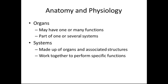Organs are made up of two or more types of tissue and may have one or many functions. An example of an organ with more than one function is the liver. The liver produces bile to help with digestion, converts glucose to glycogen and stores it for emergencies, and also helps with the breakdown of medications.